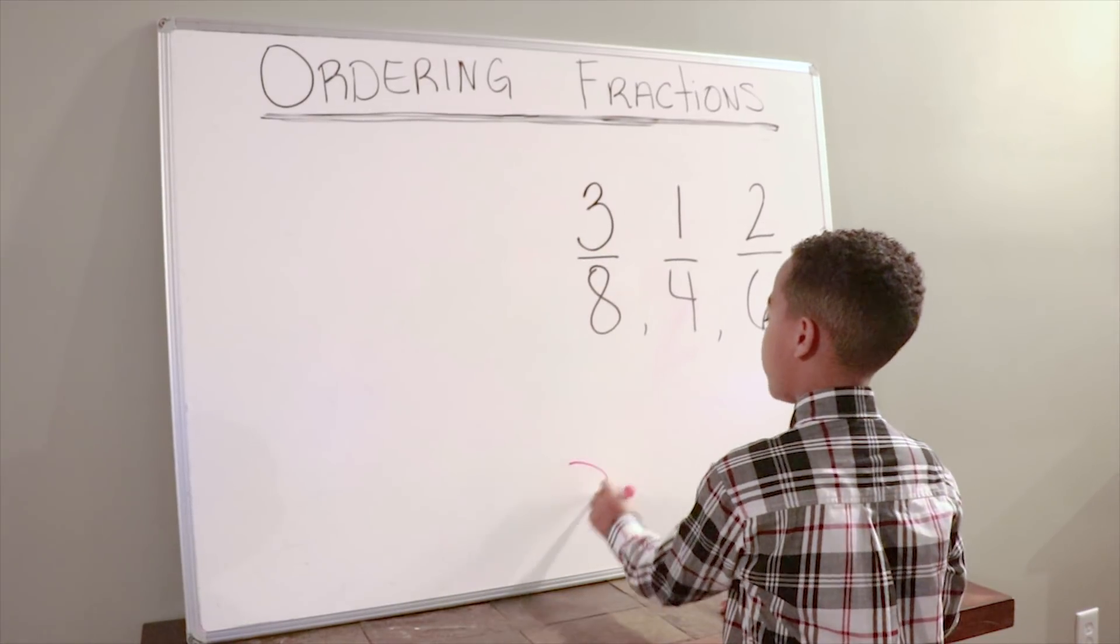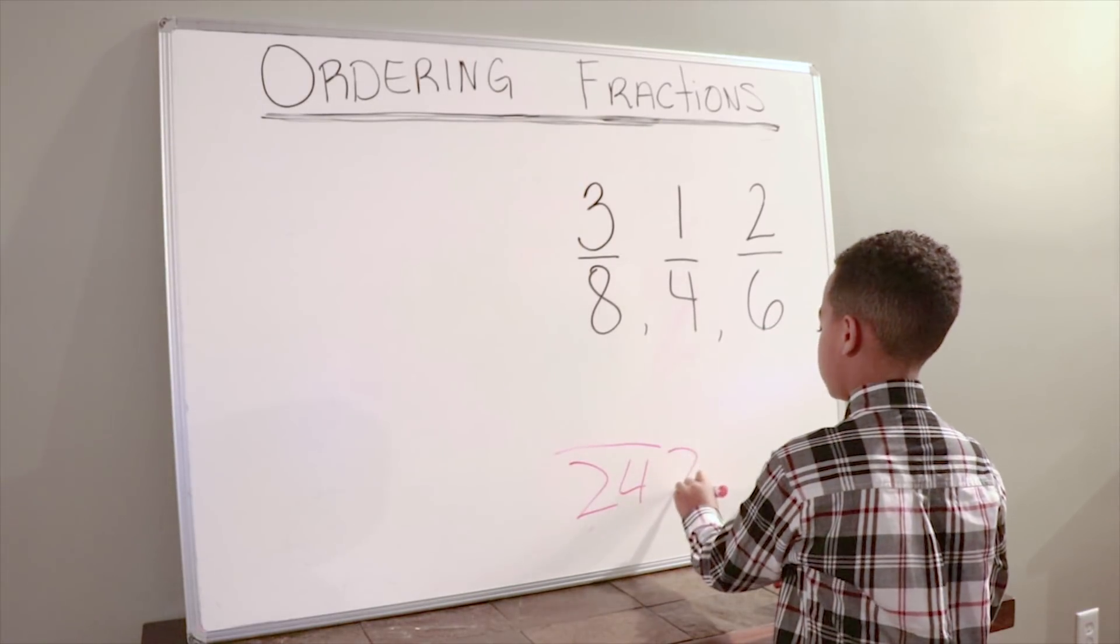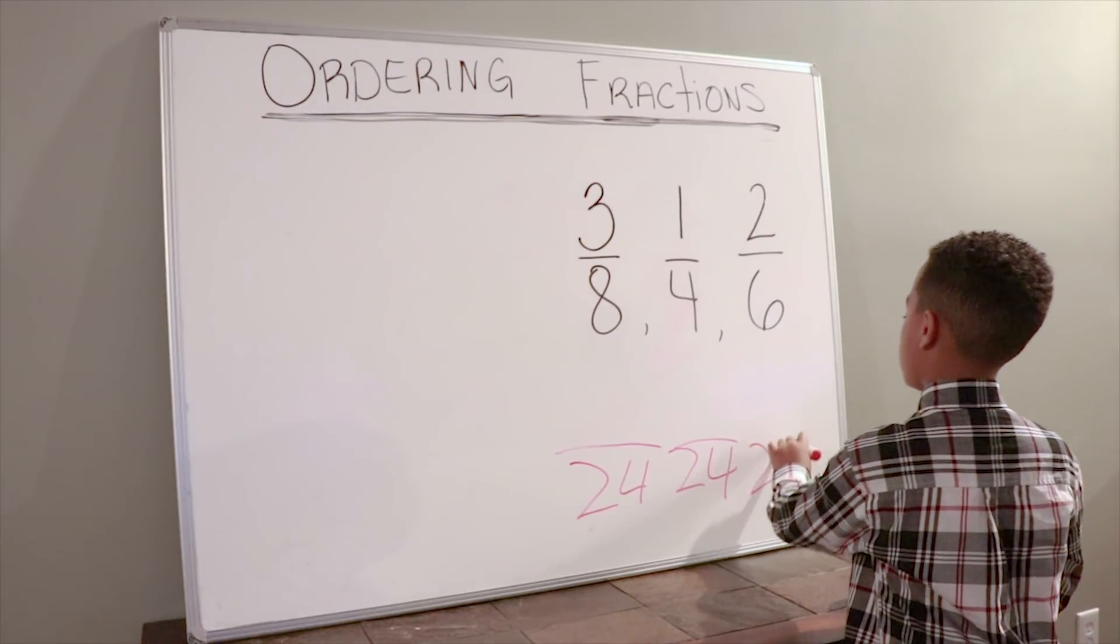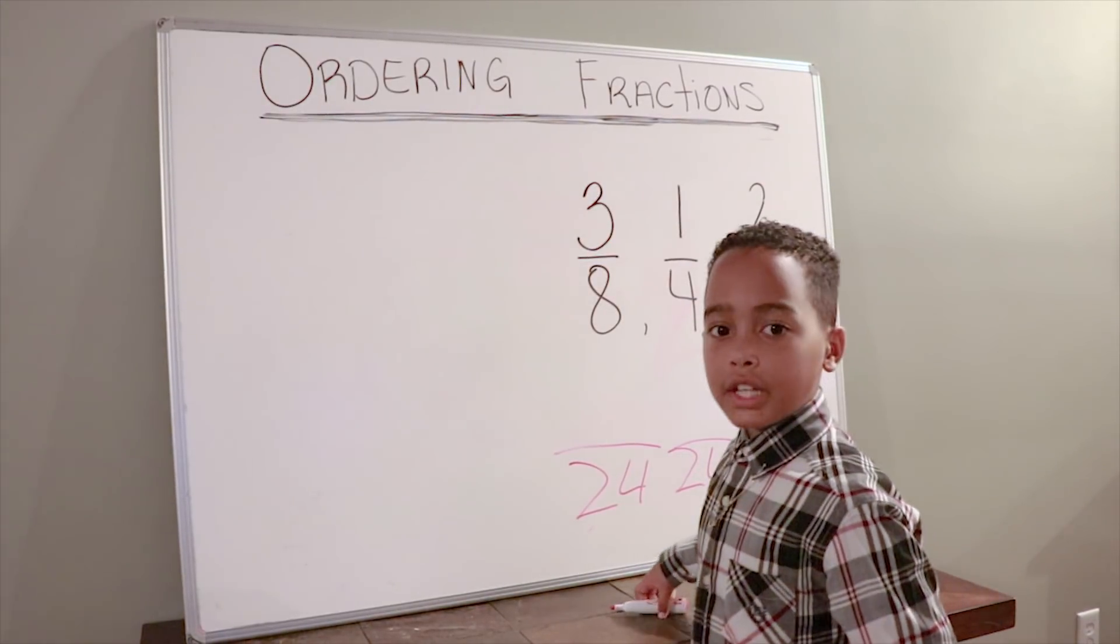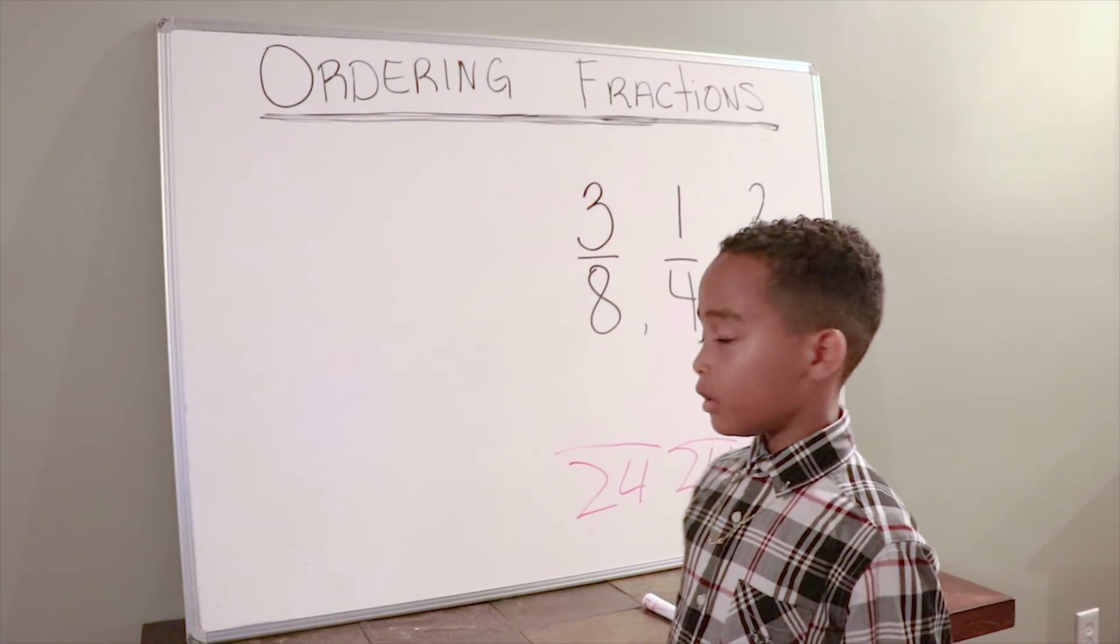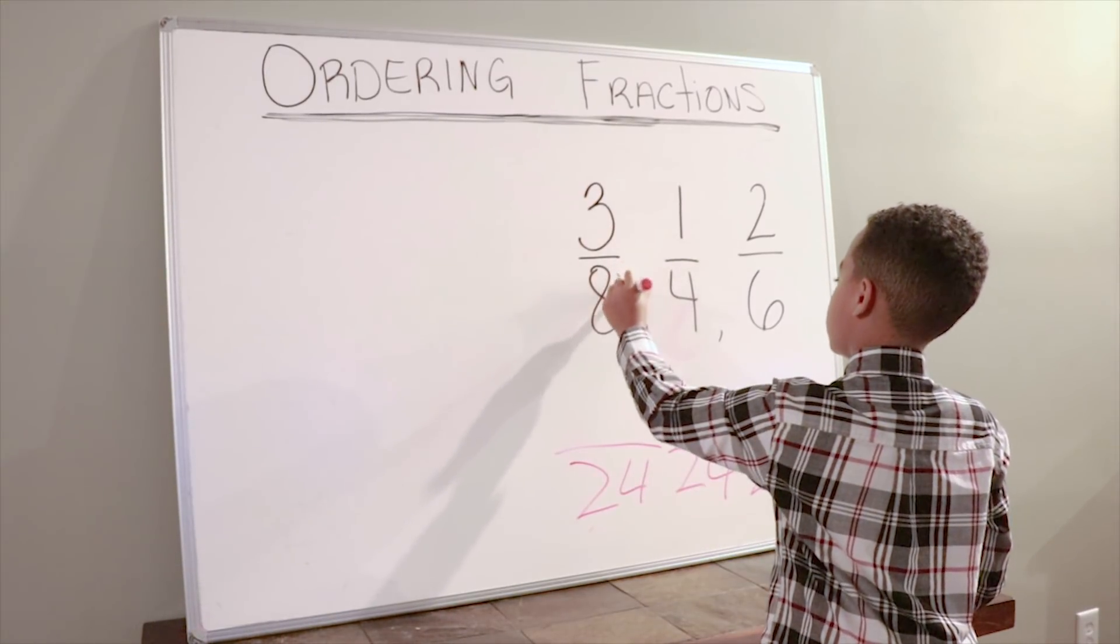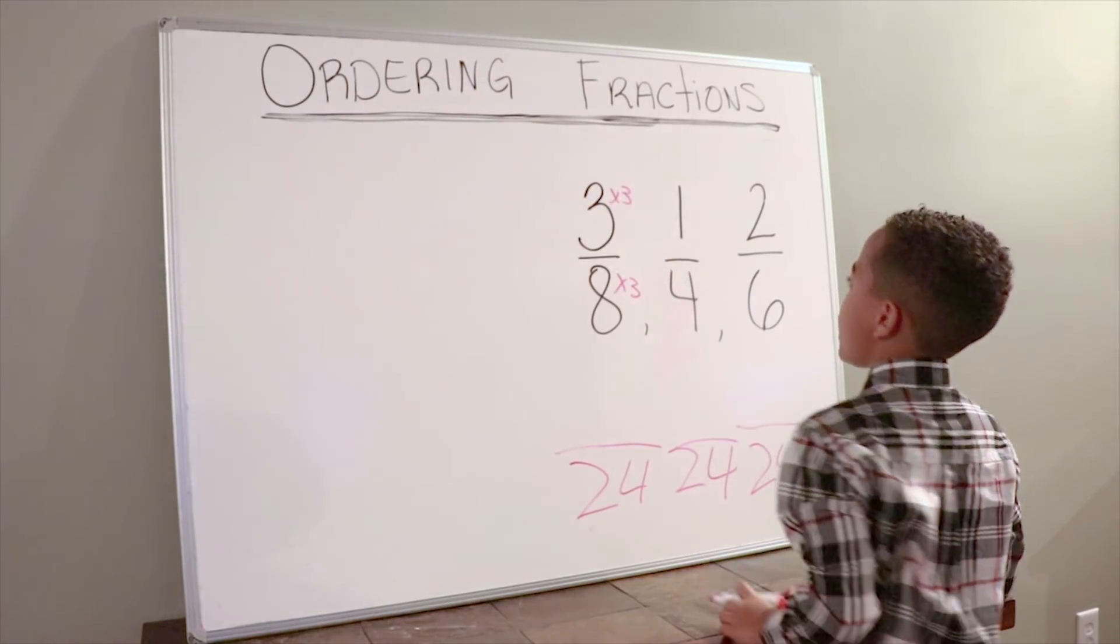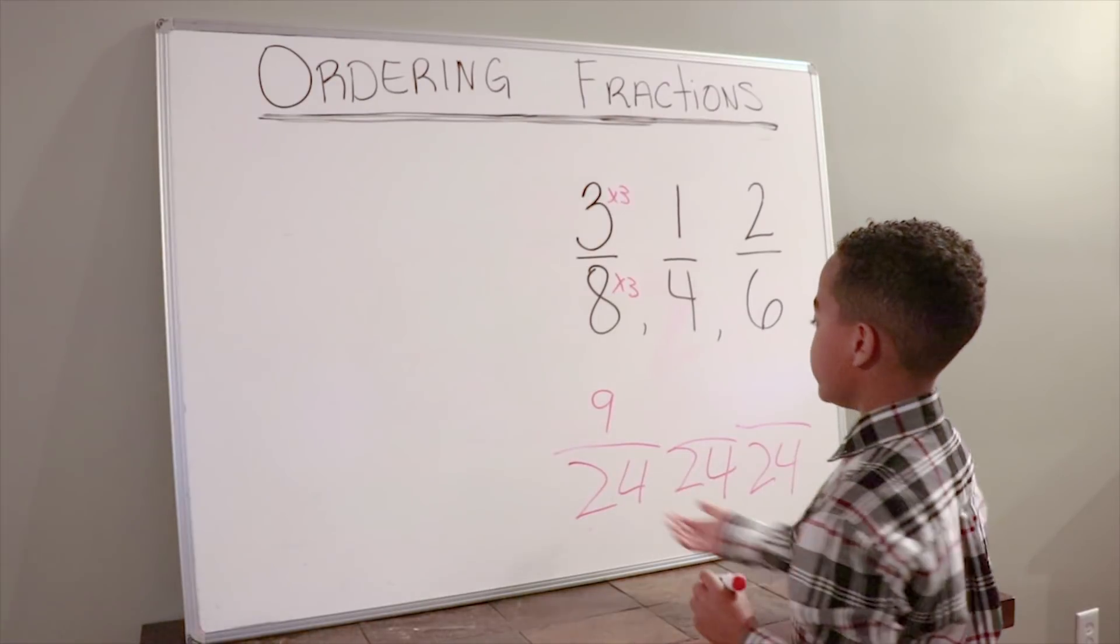We're going to write 24 as all three denominators. Now what we're going to do is see what we would times 8, 4, and 6 by to get 24. We times 8 by 3 to get 24, so we're going to times the same thing by 3. 3 times 3 equals 9. We're going to write 9 as the numerator of this fraction.